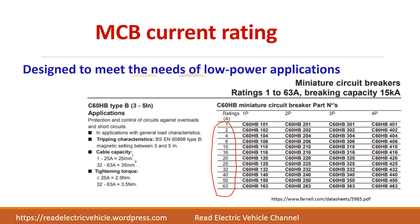Next we have the MCB current rating. MCBs are designed for low power applications, so the current requirement is normally below 125 amps. A datasheet shows different current ratings available: 1A, 2A, 4A, 6A, 10A, 16A, 20A, 25A, and so on. Depending upon your load, you can choose the appropriate MCB. The designations 1P, 2P, 3P, and 4P represent the number of poles on the circuit breaker.